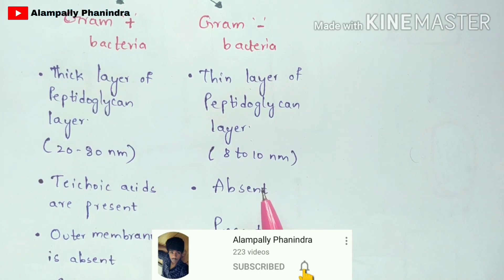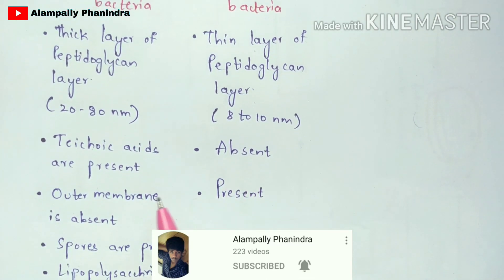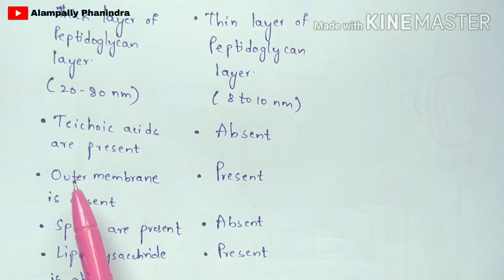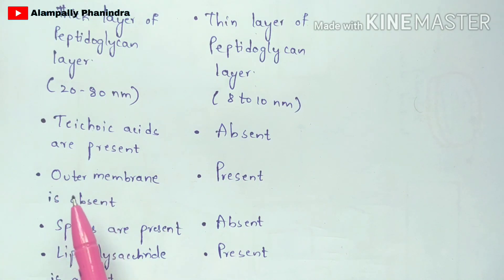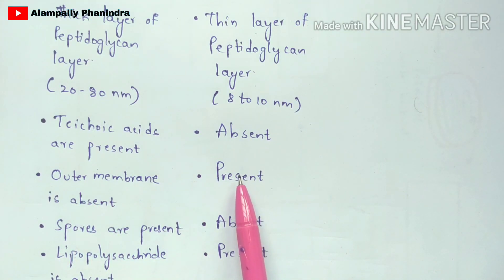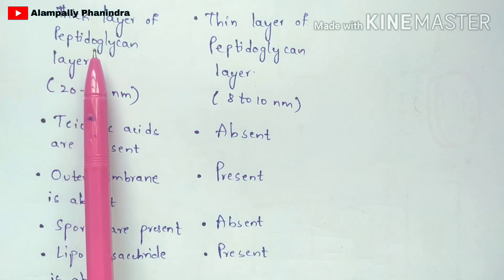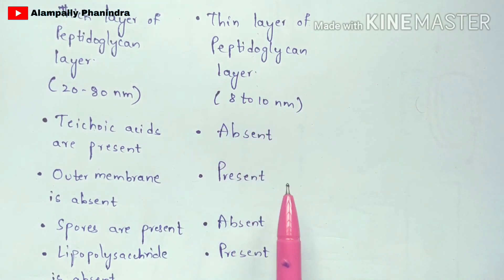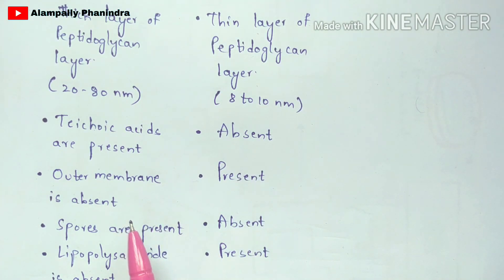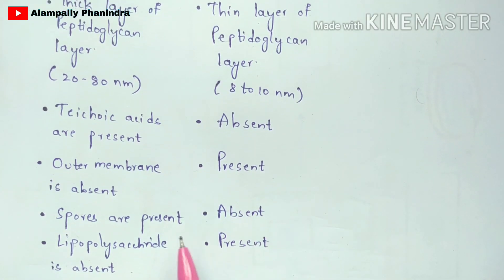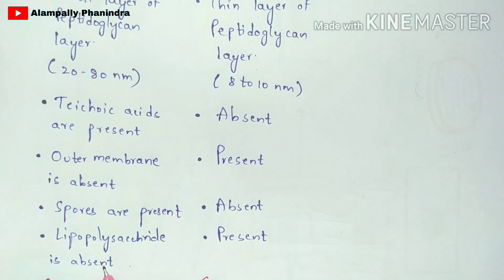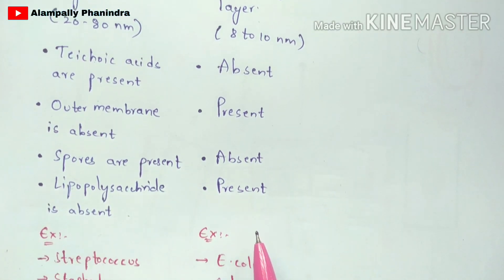In gram positive bacteria, teichoic acids are present, whereas in gram negative bacteria, teichoic acids are absent. In gram positive bacteria, the outer membrane is absent, whereas in gram negative bacteria, the outer membrane is present. Also, spores are present in gram positive and absent in gram negative. Lipopolysaccharide is absent in gram positive but present in gram negative bacteria.